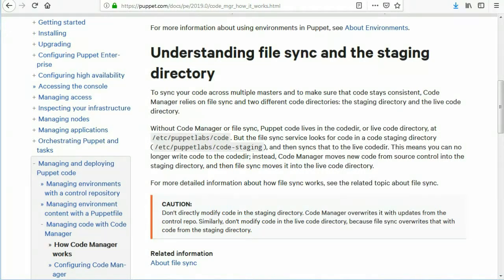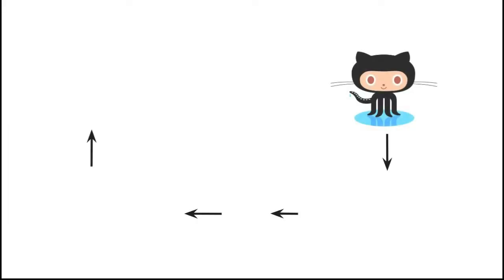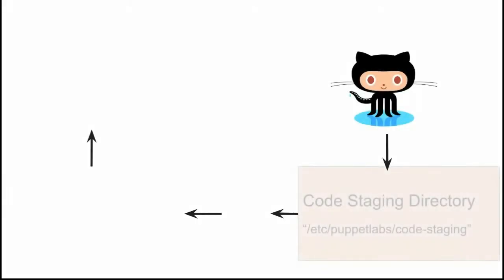Without CodeManager or file sync, Puppet code lives in the code-dir, or live code directory, at /etc/puppetlabs/code. But the file sync service looks for code in a code staging directory at /etc/puppetlabs/code-staging, and then syncs that to the live code-dir.